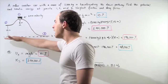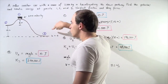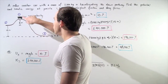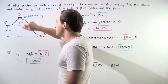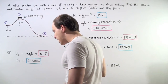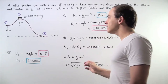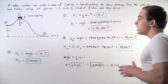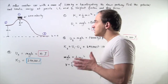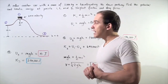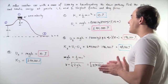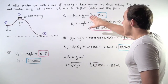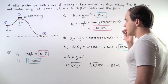We choose the ground to have a height of 0, point 2 to be 10 meters above the ground, and point 1 to be 15 meters above the ground. At point 1, the velocity of the car is 0, which means our kinetic energy — our energy of motion — is 0 joules.